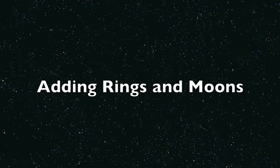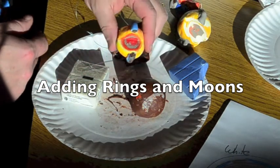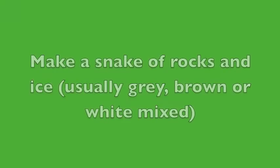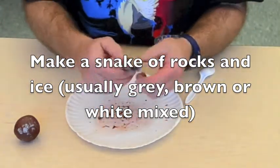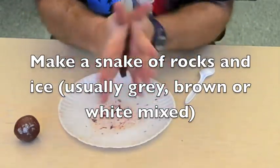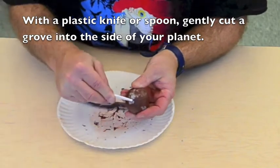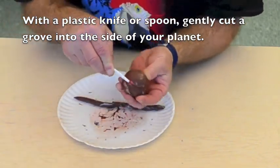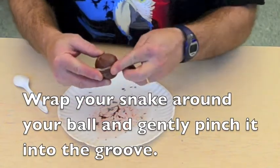After you've finished all of your layers and check with your teacher if you're not sure how to do a clear atmosphere, you're ready to do rings if your planet has rings. Make a snake of rocks and ice. I usually use gray, brown, or white and kind of mix them together. With a plastic knife or edge of a spoon, gently cut a groove into the side of your planet. Wrap your snake around your ball and gently pinch it into the groove.